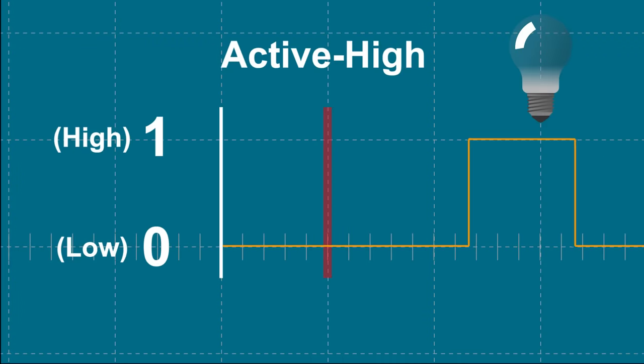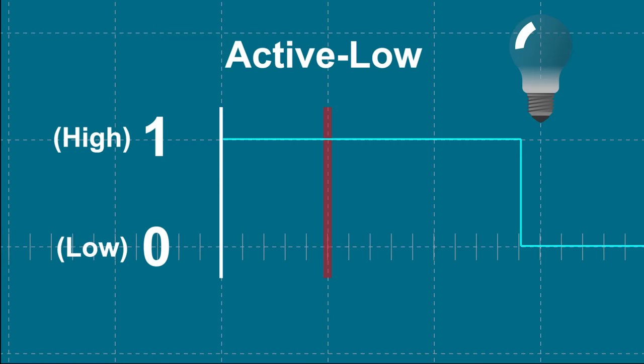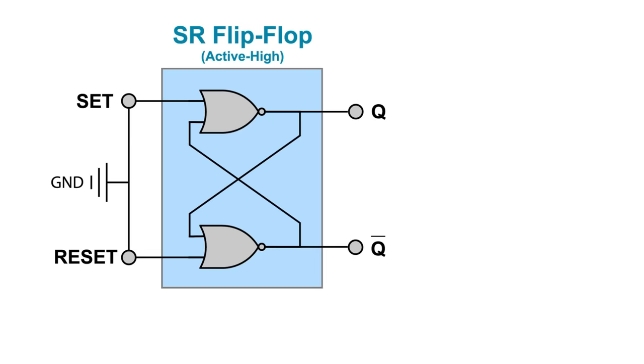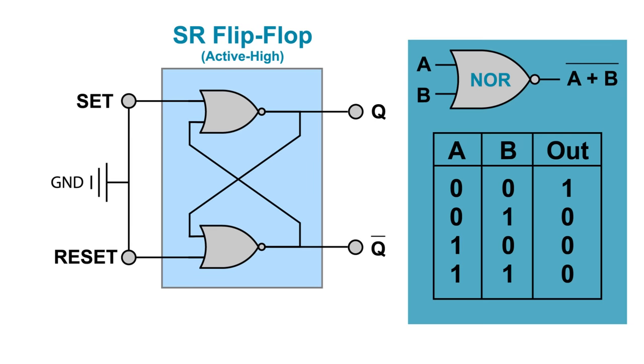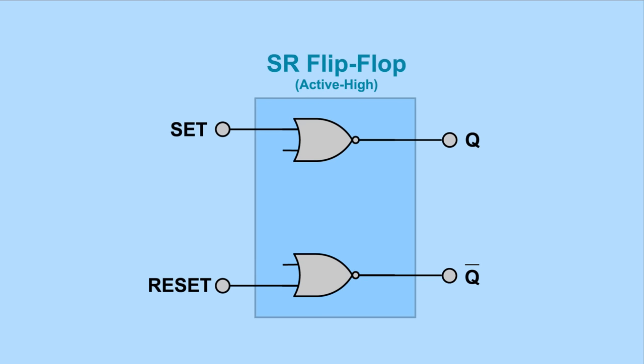SR flip-flops can be active high or active low. In an active high circuit, the inputs are normally low, a logic level 0, and go to logic level 1, high, when active. An active low circuit is the opposite, where the inputs are normally high, at logic level 1, and go low when active.